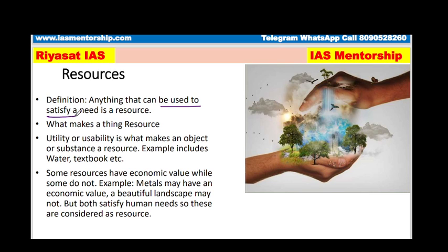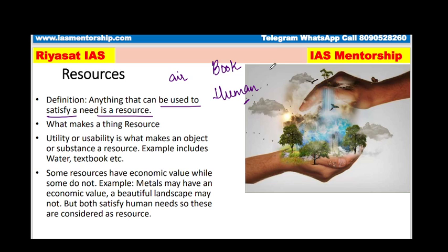Anything that can be used to satisfy a need is a resource. It can be your air, it can be your book, and human beings can also be a very important resource. So basically, resources are those things that will satisfy us. Now, what makes something a resource? For example, a pencil lying in a dustbin — is that a resource? So when does it become a resource?